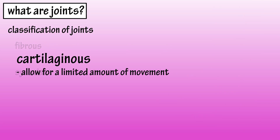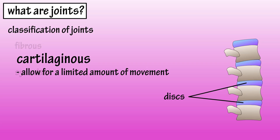Cartilaginous joints are joints where bones are connected by cartilaginous tissue, which allows for a limited amount of movement. The discs located in the spine are an example of cartilaginous joints.